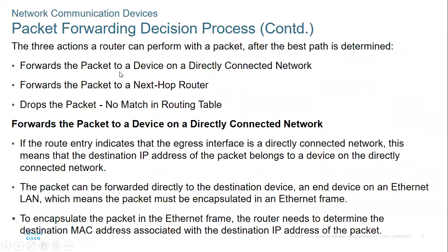The router performs three main functions: it forwards the packet to a device on a directly connected network, it forwards the packet to the next-hop router, or it can drop the packet when there is no matching entry in the routing table.